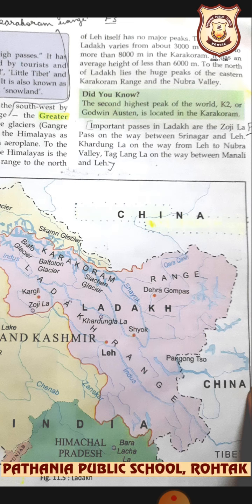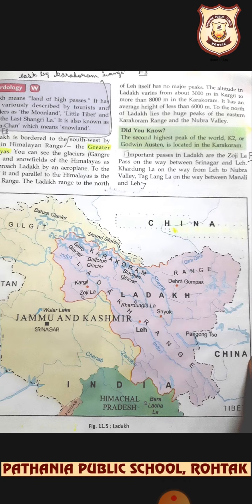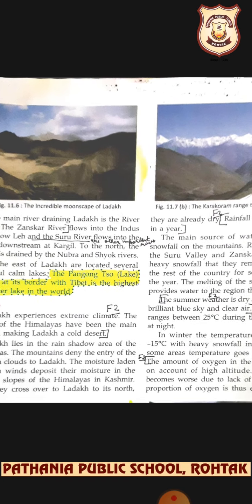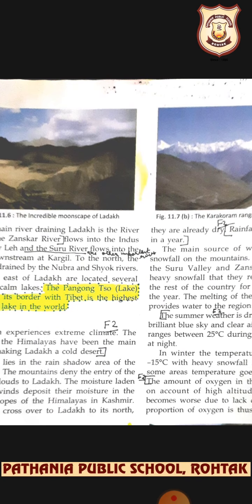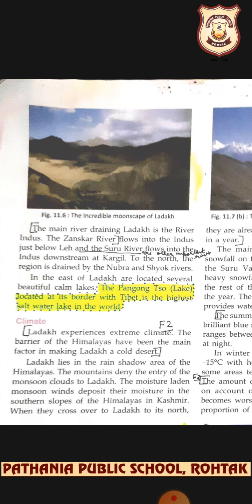The melting of snow and glaciers provides water to the region through rivers. Summer weather is dry and pleasant with brilliant blue skies and clear air — clouds do not form due to the dry conditions. Temperature ranges between 25°C during the day and 10°C at night in summer. In winter, the temperature goes down to minus 15°C with heavy snowfall, and in some areas it drops to minus 35°C.